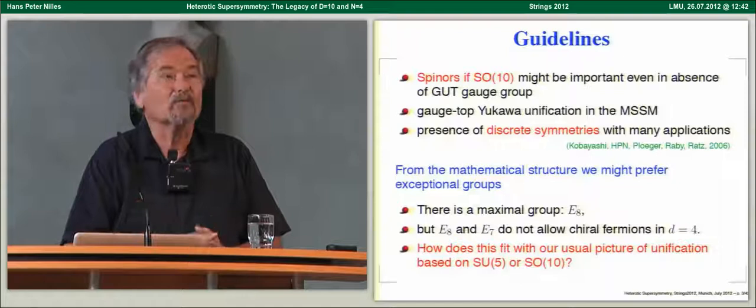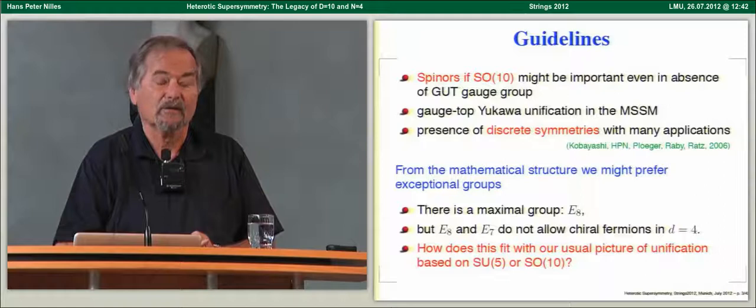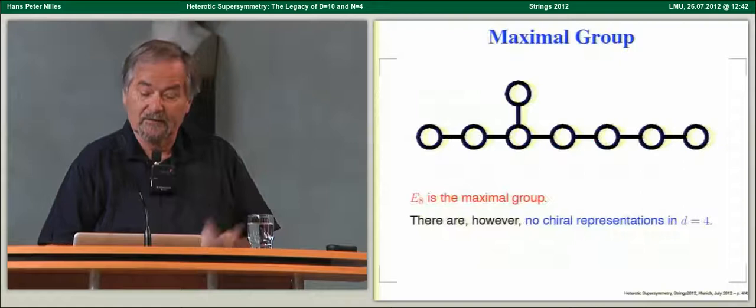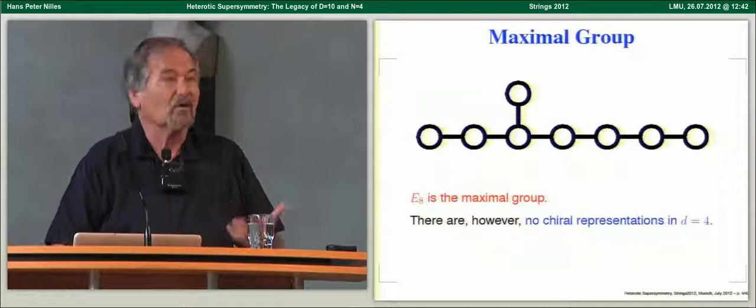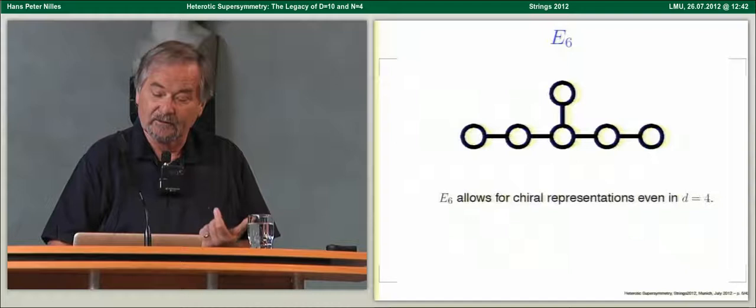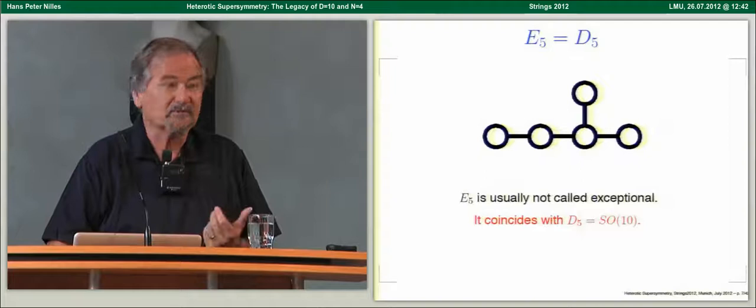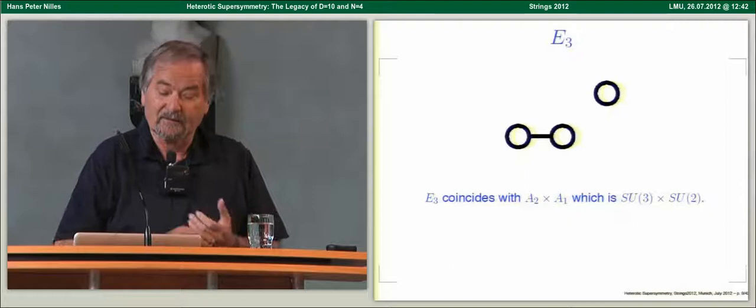A top-down argumentation might start with the maximal exceptional group E8, in the sense that nature should be exceptional — it is the maximal group. Of course, the question is how that fits with what we have from the bottom-up. We know that E8 should not be realized in four dimensions because of the chirality of fermion representations. You might have seen the picture where you explain why the standard model belongs to the exceptional series by chopping off nodes in the Dynkin diagrams: E8 → E7 → E6 → E5 (which is D5) → SU(5), and the standard model is E3.